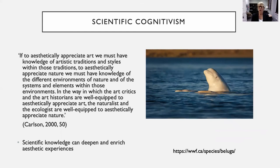On scientific cognitivism, Carlson's position can be summarized this way: 'If to aesthetically appreciate art we must have knowledge of artistic traditions and styles, to aesthetically appreciate nature we must have knowledge of the different environments of nature and of the systems and elements within those environments. In the way in which art critics and art historians are well equipped to aesthetically appreciate art, the naturalist and the ecologist are well equipped to aesthetically appreciate nature.'